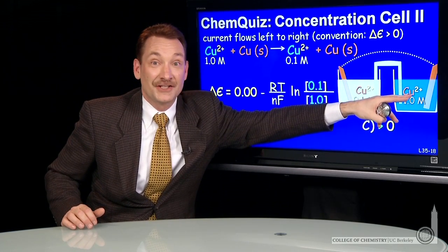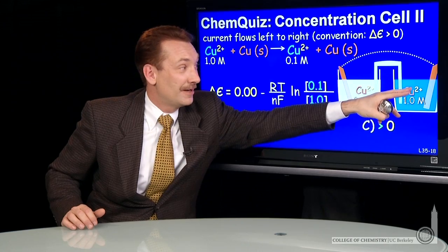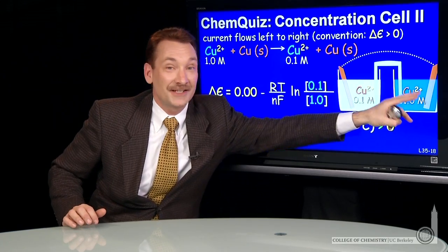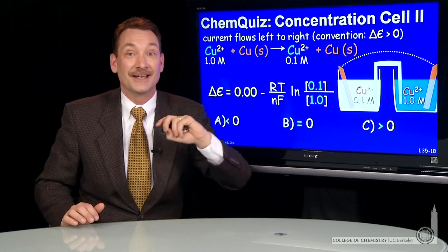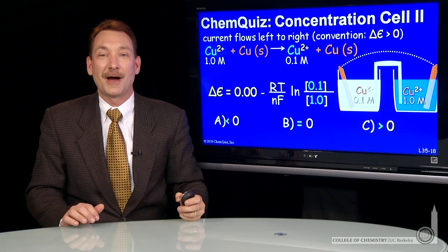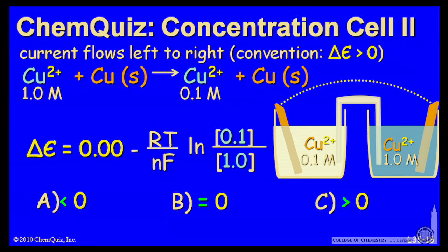would have an oxidation occurring here, copper ions being oxidized to copper metal, reducing the concentration of copper ions. So this all hangs together, and we understand for this cell that the cell potential is greater than 0.